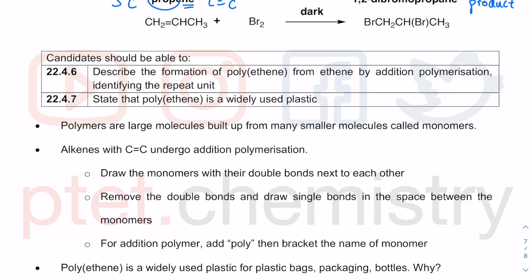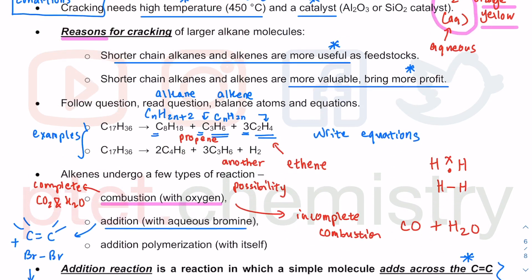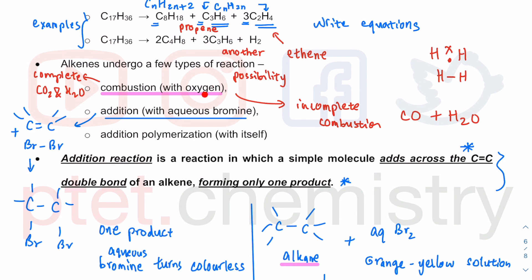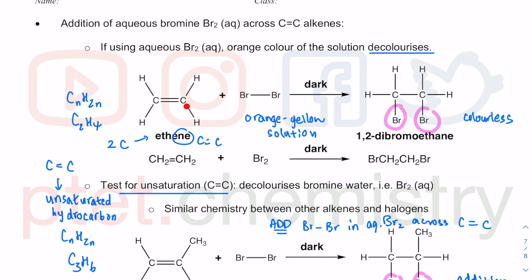In continuation of this idea of alkenes, alkenes undergo a third type of reaction. Previously, I've talked about alkenes undergoing combustion, giving CO2 and H2O. In addition to cracking long-chain hydrocarbons, you can write equations for alkenes combusting with oxygen — for example, C2H4 plus O2 or C3H6 plus O2 — to get CO2 and H2O. You can also do addition with bromine, which essentially just forms one product as you add across the carbon-carbon double bond.